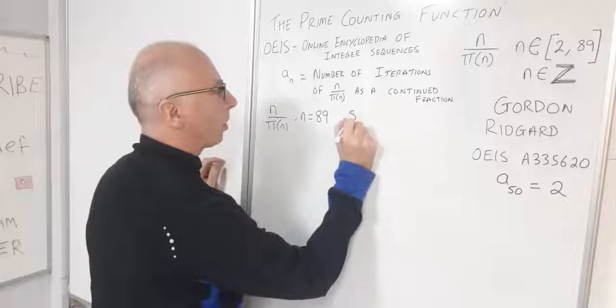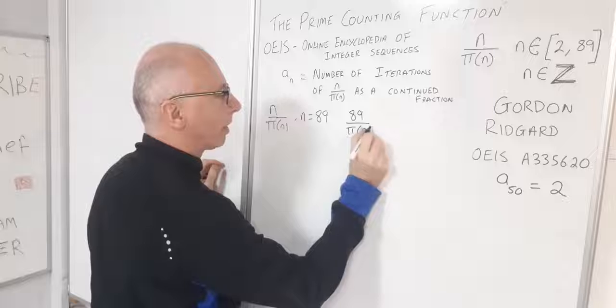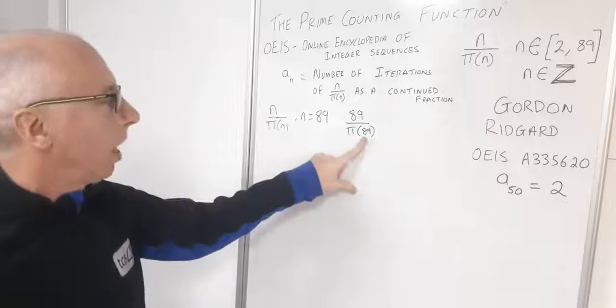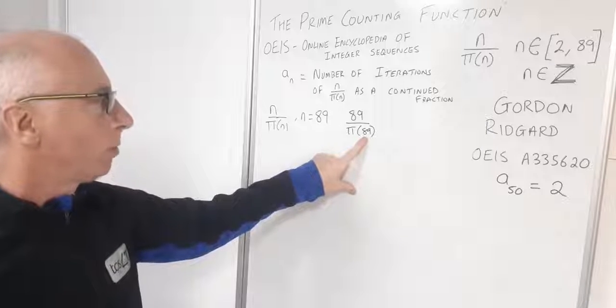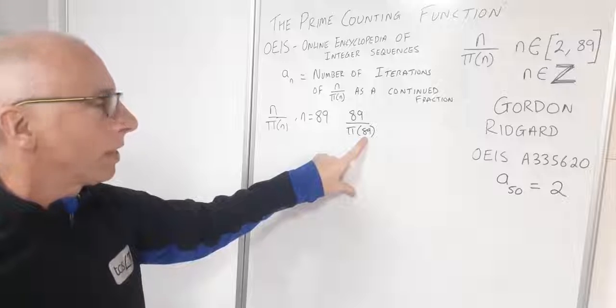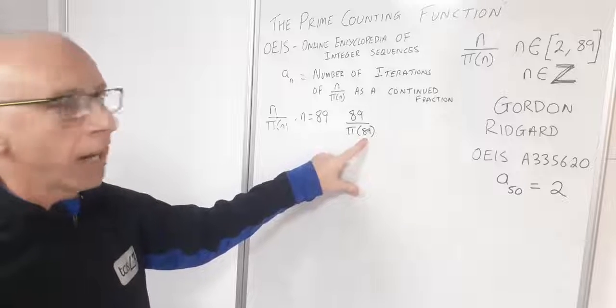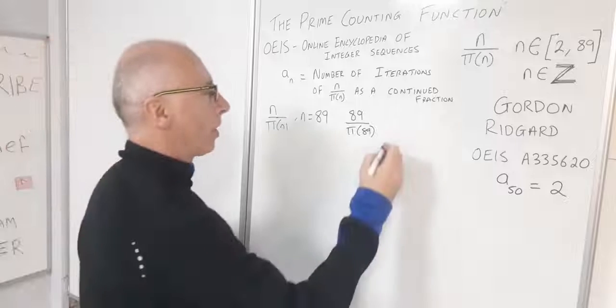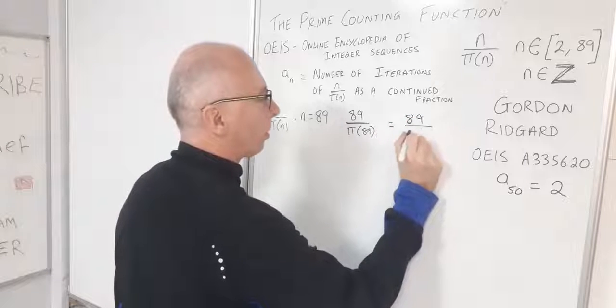Let's write this up on the board: 89 over π(89). Now how many prime numbers is there up to 89? Well I know there's 25 up to 100, so therefore up to 89 there will be 24 because there's only one prime number between 89 and 100 and that would be 97. So then we've got 89 over 24.